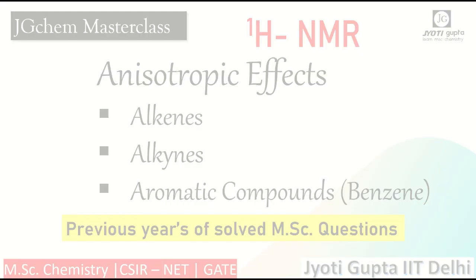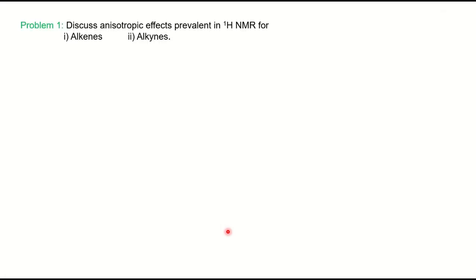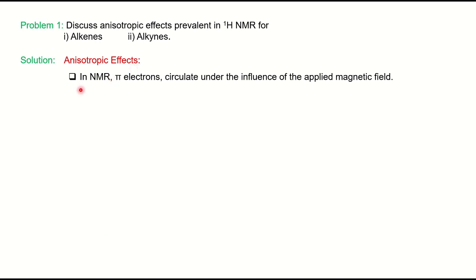Now we will move with the first question: discuss anisotropic effects in proton NMR for alkenes and alkynes. First we will see what is anisotropic effect. Basically in NMR, we are talking about all molecules which are having pi electrons. As NMR stands for nuclear magnetic resonance, we have a molecule where we apply an external magnetic field.